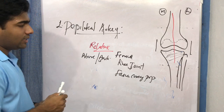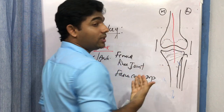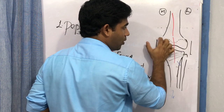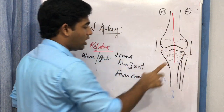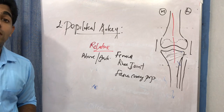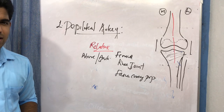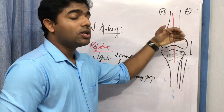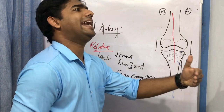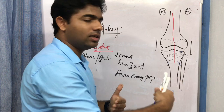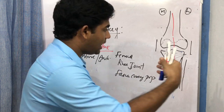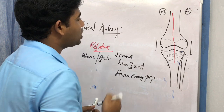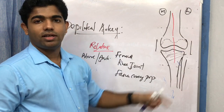Remember the popliteal fossa is posterior, so think about structures anterior to it: the lower end of the femur, then the knee joint, and just below that the fascia covering the popliteus muscle.